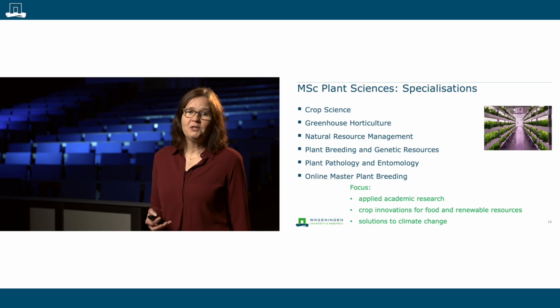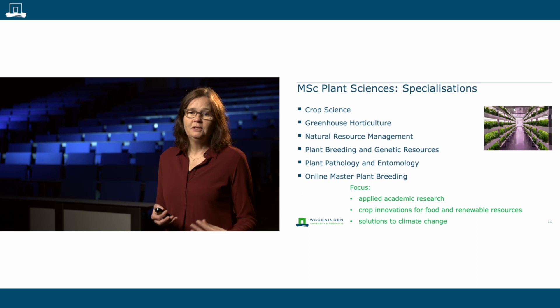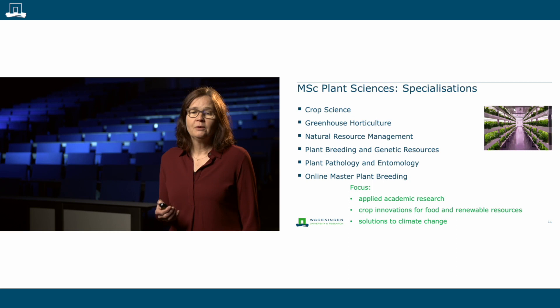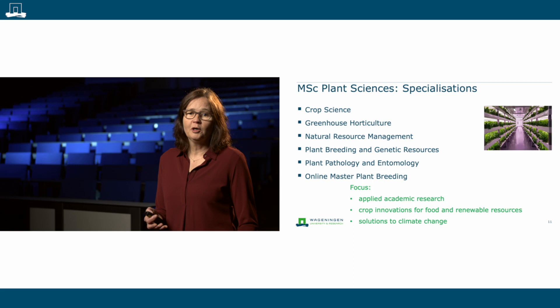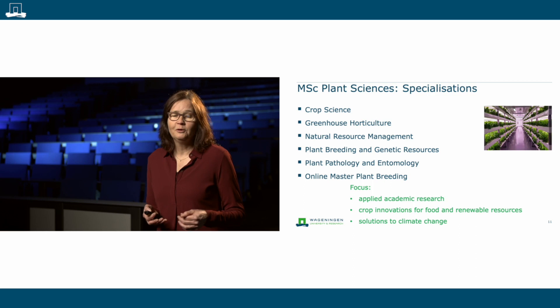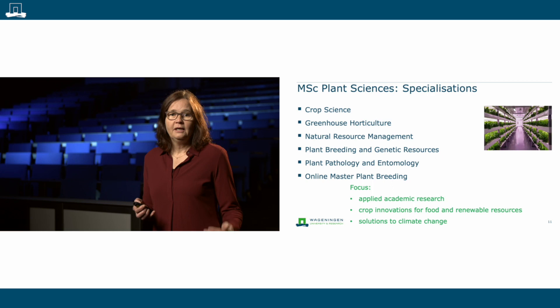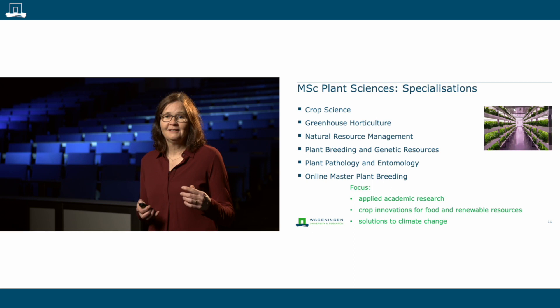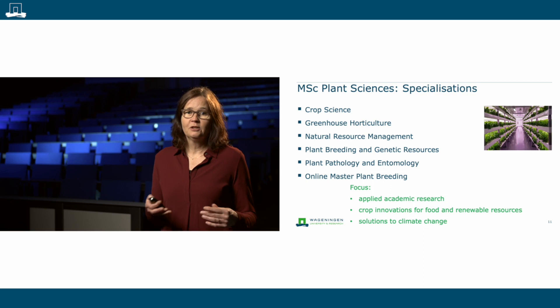All these topics are related to the specializations in the Master of Plant Sciences. In the specialization Crop Science, you will mainly focus on the modeling aspect to predict yield and to provide information for precision farming. In Greenhouse Horticulture, you will learn about optimizing the horticulture system, developing vertical farming and urban farming systems in which all conditions for plant growth can be controlled. To do this, you need sufficient knowledge of the physiology behind crop production. In Natural Resource Management, you will focus on the integration of nature and agriculture — for example, by developing strip cropping experiments to improve biodiversity and provide ecosystem services for optimal crop production in a sustainable way.